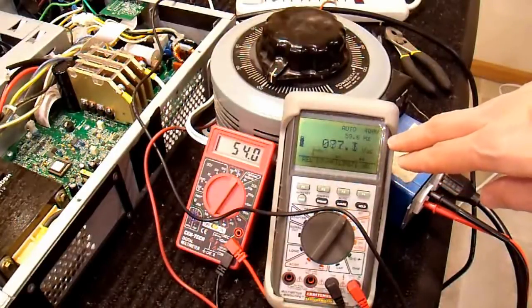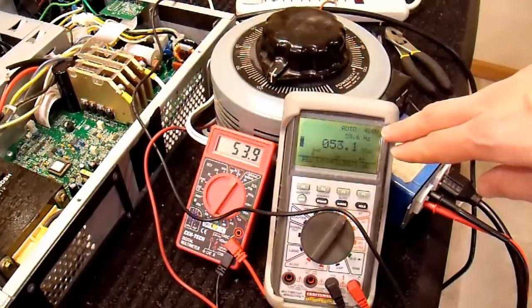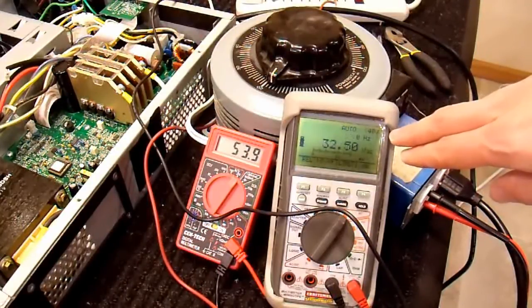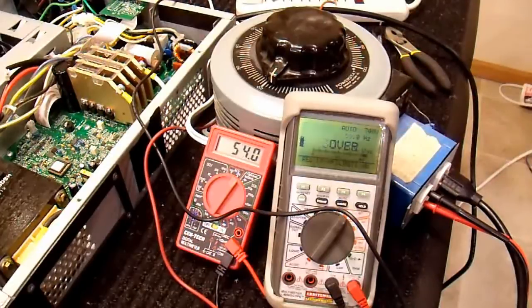Now if you take a look at this meter here, you can see that it is slowly going down. And that's because the output of the UPS is just ever so much slower than 60 hertz than the wall outlet.